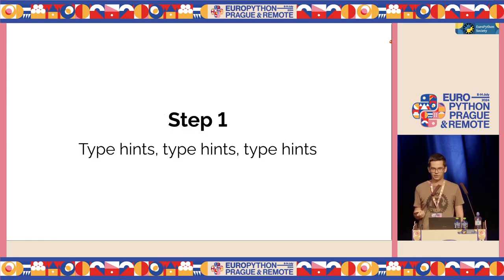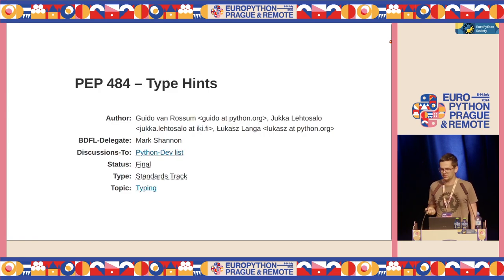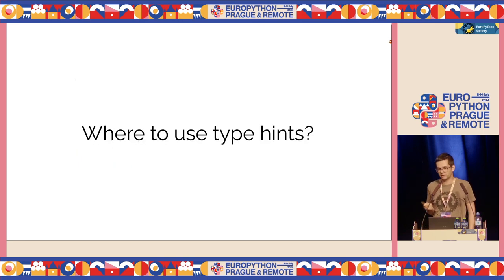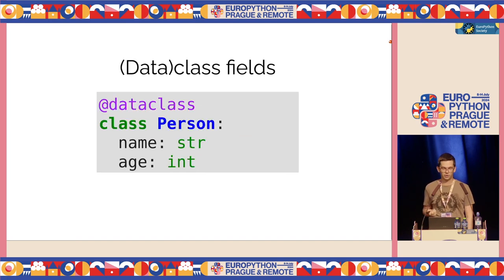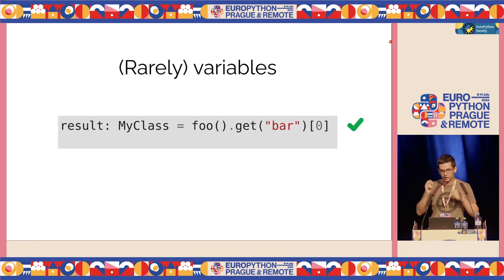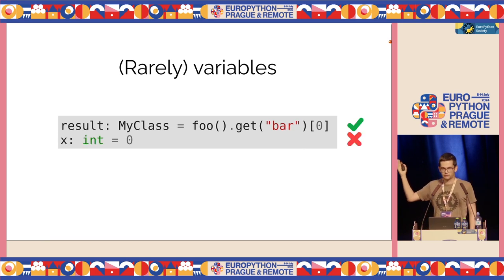Step one is using type hints everywhere. I really use them pretty much everywhere. Type hints are the small annotations you can add to your Python programs to say that some value is of some specific type — added in Python 3.5 and being extended and improved in every new version. I use them most importantly in interface boundaries, so in function signatures — what types are going in and what type is going out. I also use them a lot in dataclass fields, and sometimes for variables, but only quite rarely, because adding type hints for trivial expressions is just additional noise.